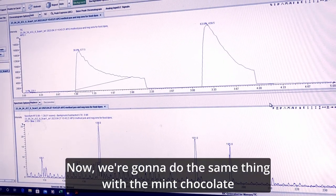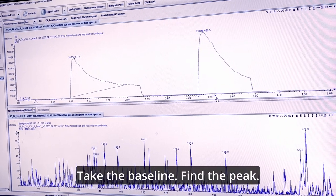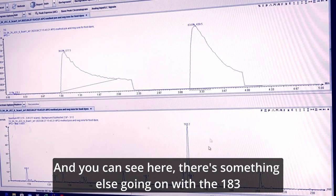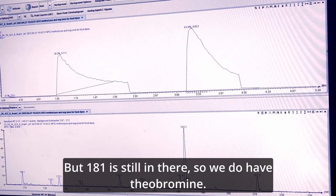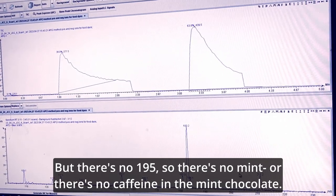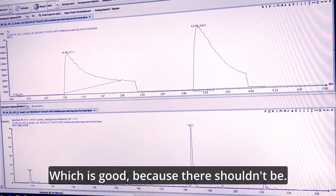Now we're going to do the same thing with the mint chocolate. Take the baseline, find the peak, and you can see here there's something else going on with the 183, but 181 is still in there. So we do have theobromine, but there's no 195. So there's no caffeine in the mint chocolate, which is good because there shouldn't be.